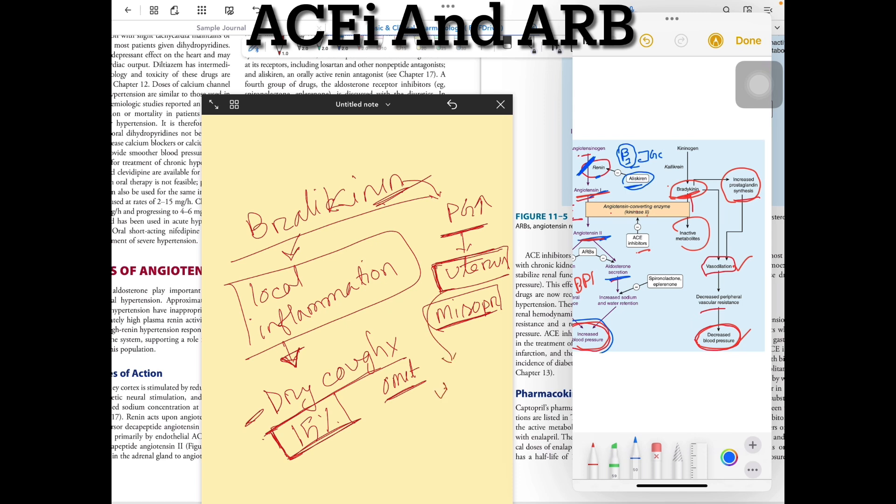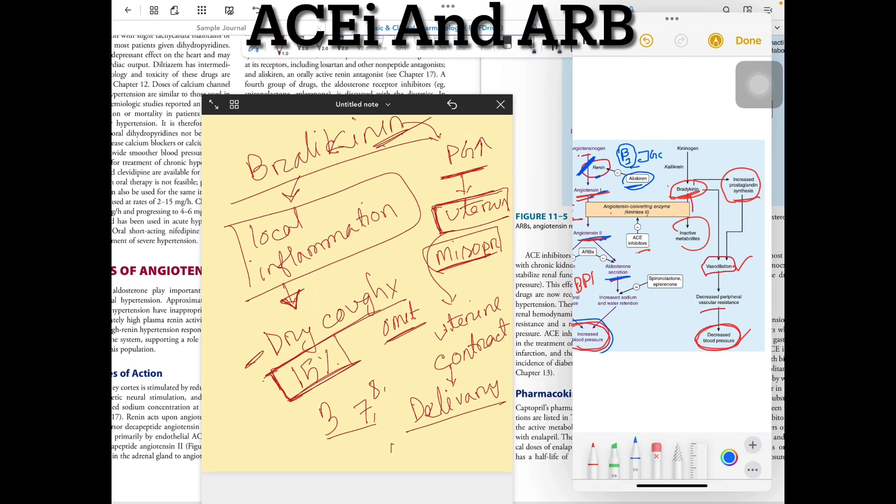Uterine contraction. Prostaglandins cause uterine contraction. This can lead to delivery complications, abortion, and premature labor.